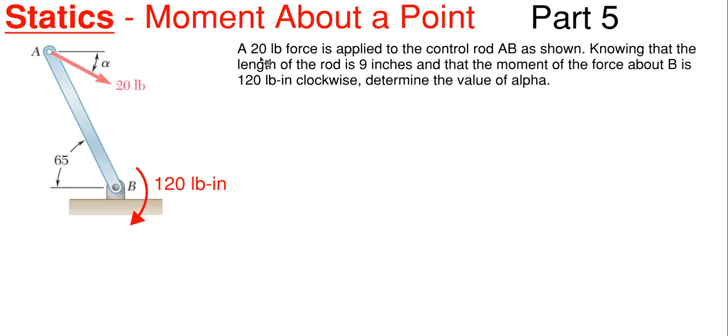And what we have going on with this one is that we have a 20 pound force applied to a control rod AB as shown, knowing that the length of the rod is nine inches and that the moment of the force about B is 120 pound inch clockwise rotation.